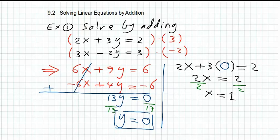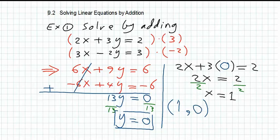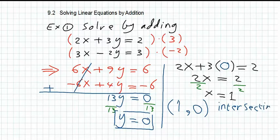By this we reached the final answer: solving these two equations, we found a point of intersection where x is equal to one and y is equal to zero. This is the point of intersection — we have two intersecting lines. So the condition here is intersecting lines, and we have one unique solution: the point (1, 0).